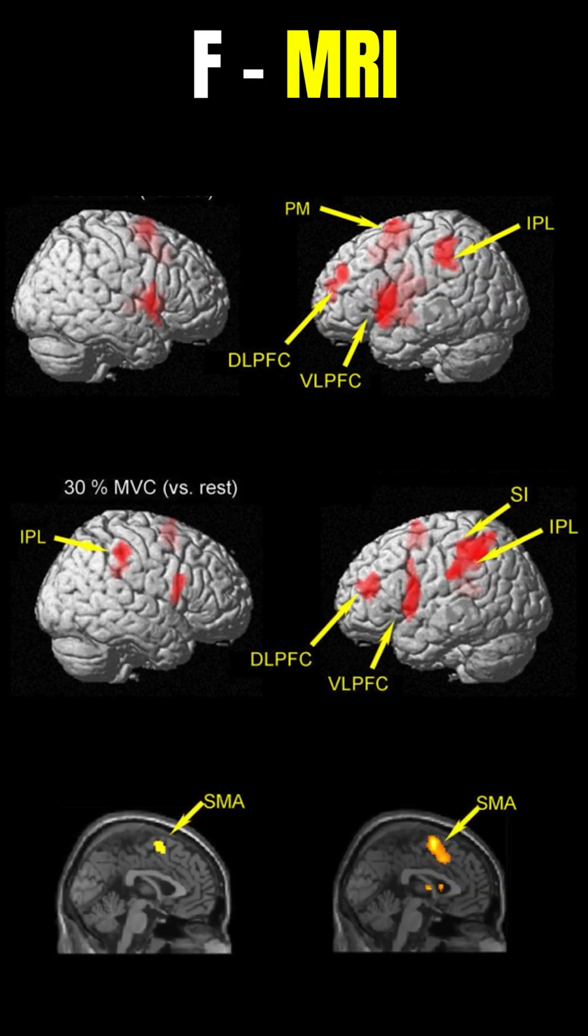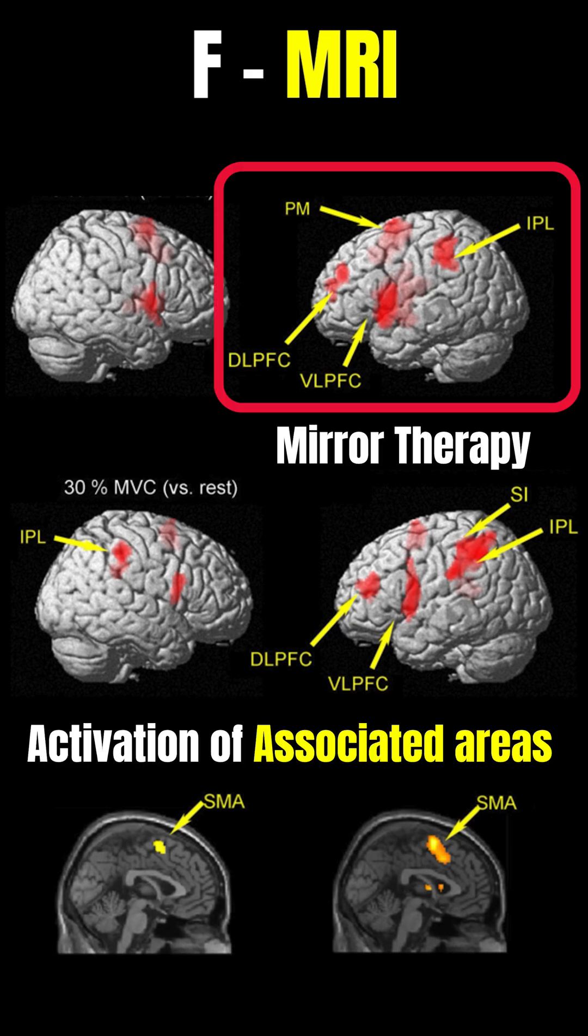In functional fMRI imaging, it has been seen that there is increased activity in the primary motor cortex M1 when doing mirror therapy. Activation in pre-motor areas and supplementary motor areas as well.